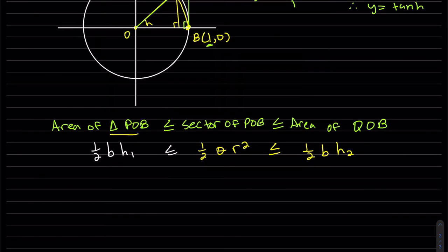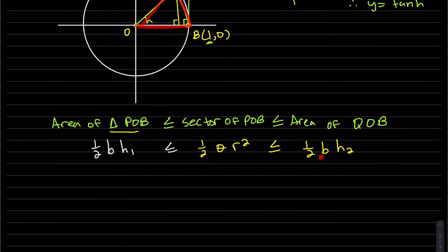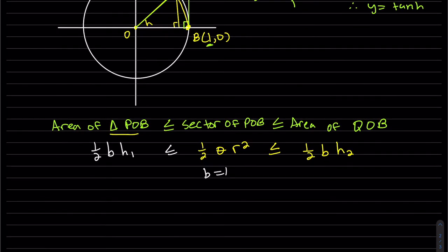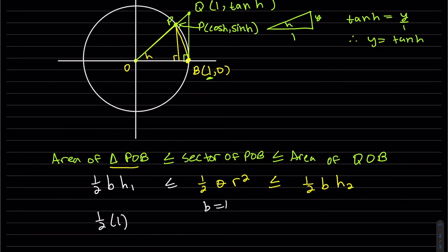So now let's put in our base of this triangle is one. Our base of the big triangle is one. So this is half times one times height one is this height, which is the sine of h. θ is h, and r is one. Base is one. And our h₂ is right there, tan of h.